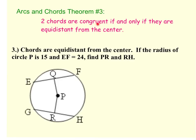Two chords are congruent if and only if they are equidistant from the center. So that means if two chords are the same distance from the center, then those chords are congruent.